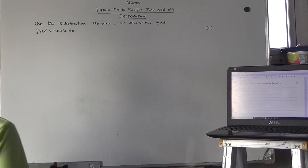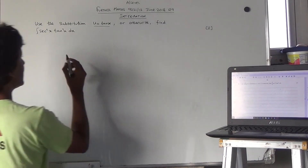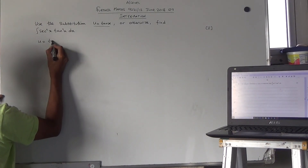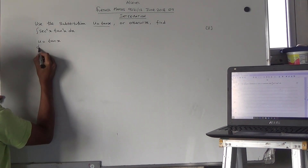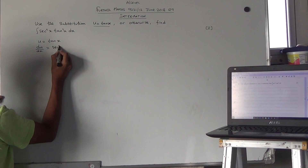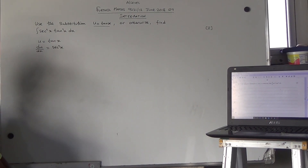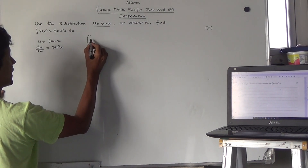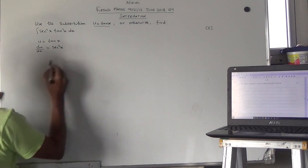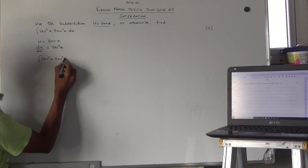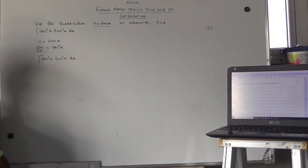The first thing we do is look at the substitution. So if u = tan x, we know that du/dx should equal sec²x. Now from here, we need to integrate, so the integral of sin²x · tan²x dx.